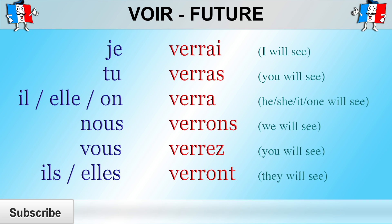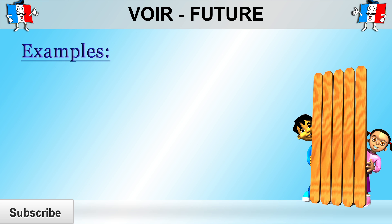Remember that, as always with conjugated verbs, the final S and the final T are silent. Also note that the E in verrai, verra, etc. is pronounced like an E with an acute accent because it is followed by two consonants. So let's have a look at a few examples.